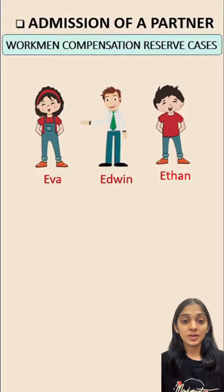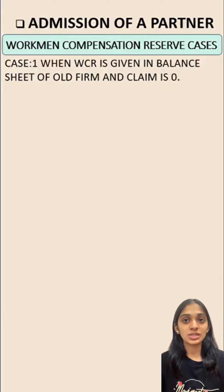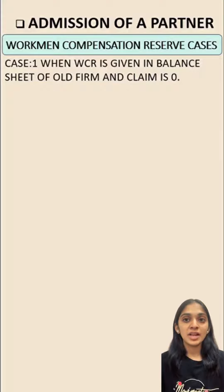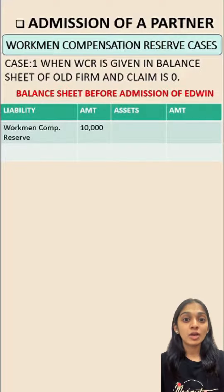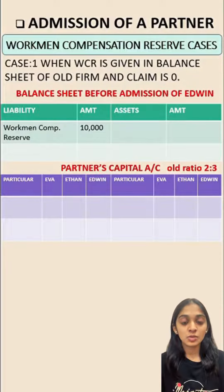Today we are going to learn about different cases for recording workman compensation reserve. The first case is when workman compensation reserve is given in the balance sheet of the old firm and the claim is zero. Here, before the admission of Adwin, workman compensation reserve is 10,000 and claim is zero, so it will be directly distributed among the old partners in their old ratio — Eva and Ethan in ratio 2:3.